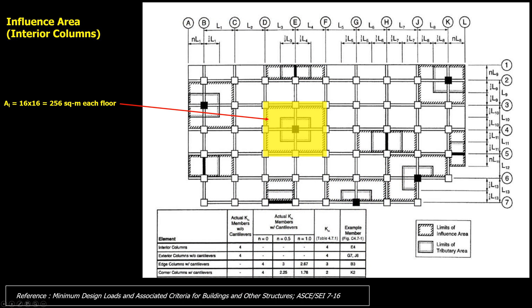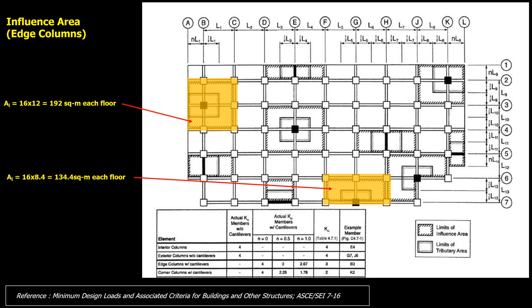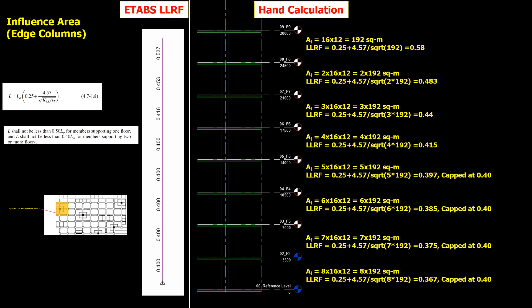For the interior column as shown here, the influence area is 256 square meters per each floor. The manual calculation in comparison with ETABS's automatic live load reduction factor for each floor is as shown here. For the edge columns, the influence area is 192 square meters and 134.4 square meters per each floor, and the manual calculation in comparison with ETABS's automatic live load reduction factor for both edge columns is as shown here.